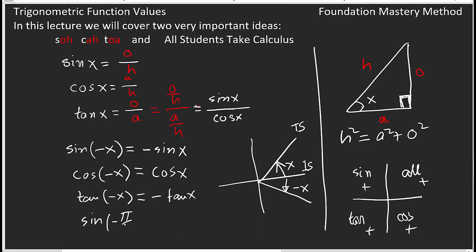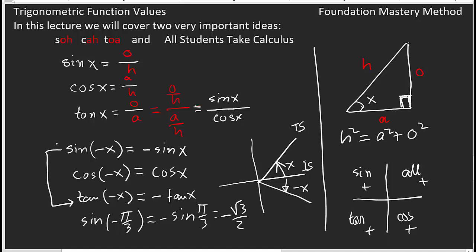So when I write sine of negative π/3, this equals negative sine(π/3). Since π/3 is 60 degrees and sine 60 is √3/2, we get negative √3/2. From algebra, if a function returns the negative value when the input changes sign, that function is called an odd function. Therefore, sine and tangent are odd functions.